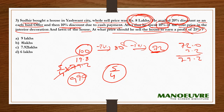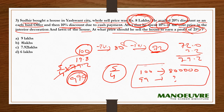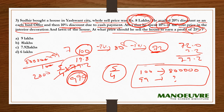We assumed 100 equals 8 lakhs, and we got a selling price of 99. So the actual selling price is 8 lakhs × 99/100 = 7.92 lakhs. Option C is the correct answer. This is the type of question you will get in the CAT exam, and this video gives you an overview of how to handle such questions.